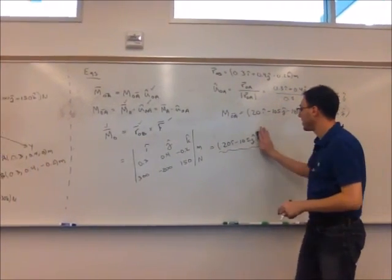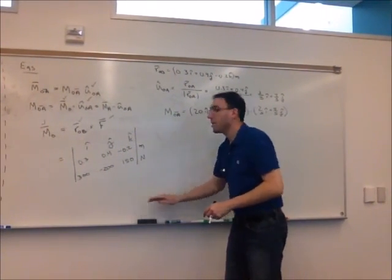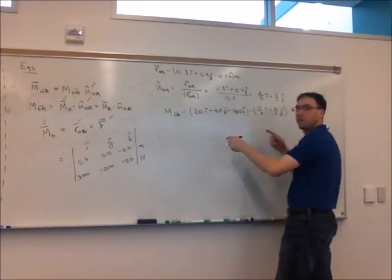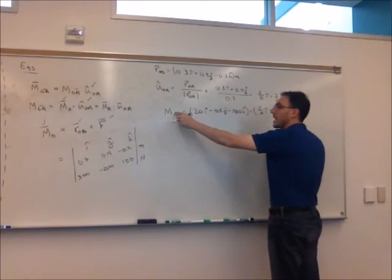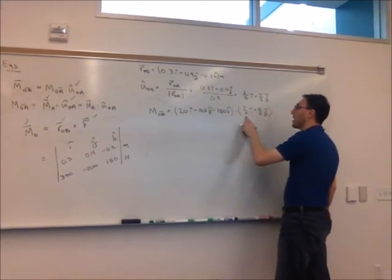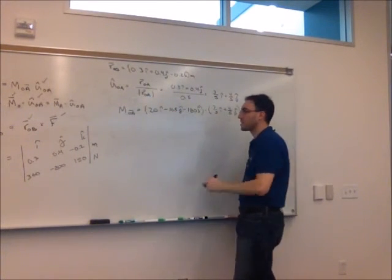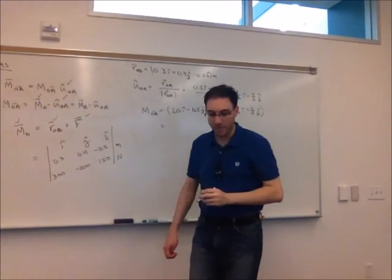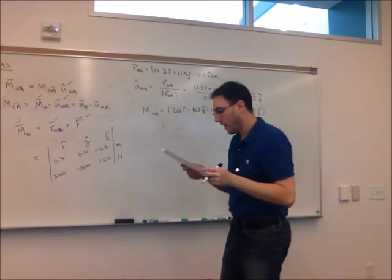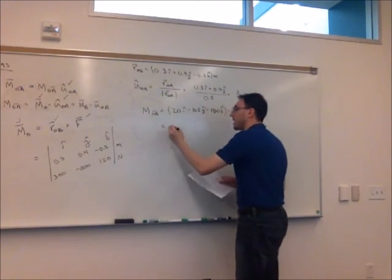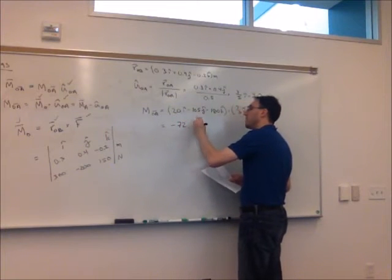We're done with this for right now. So going through this dot product, remember we multiply the like terms and the answer is a scalar quantity. So 20 times 3 fifths minus 105 times 4 fifths. We're going to get the scalar value here of negative 72 newton meters.